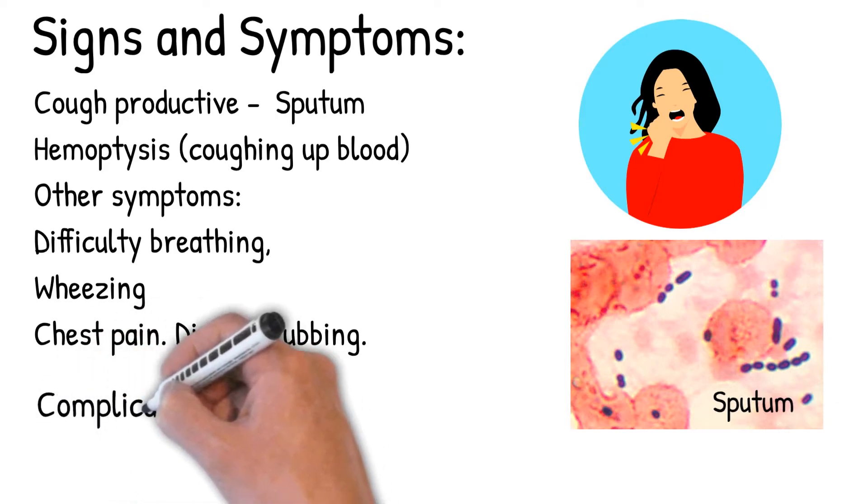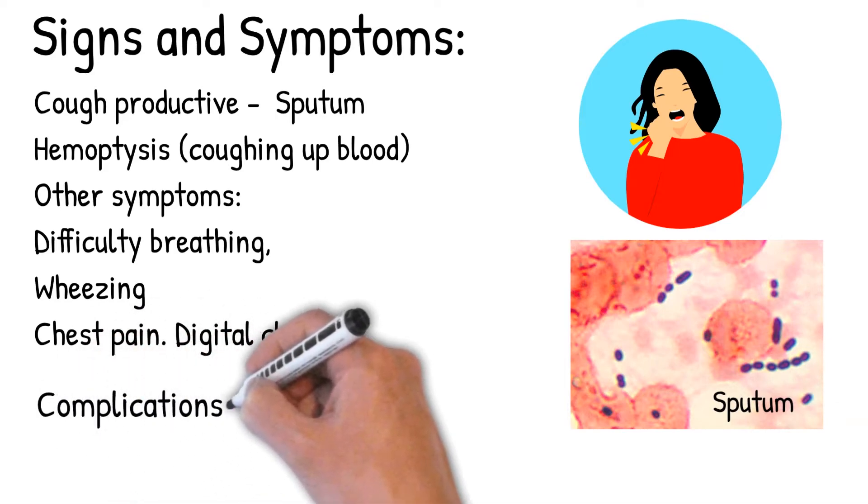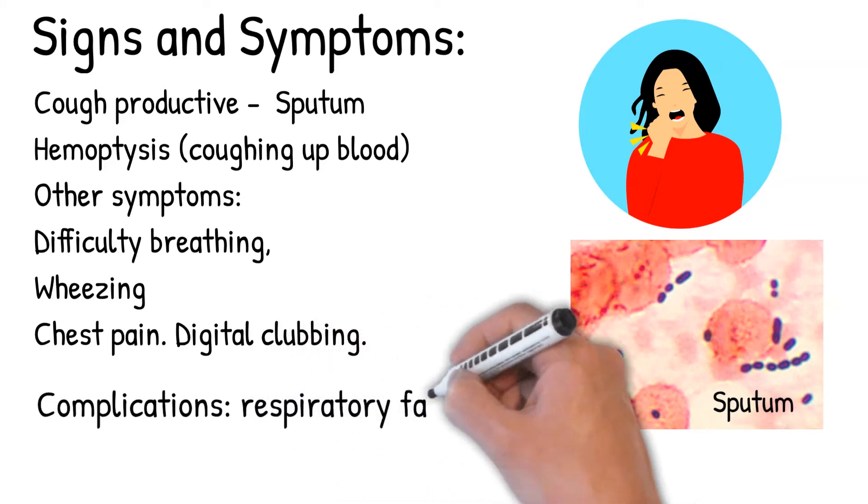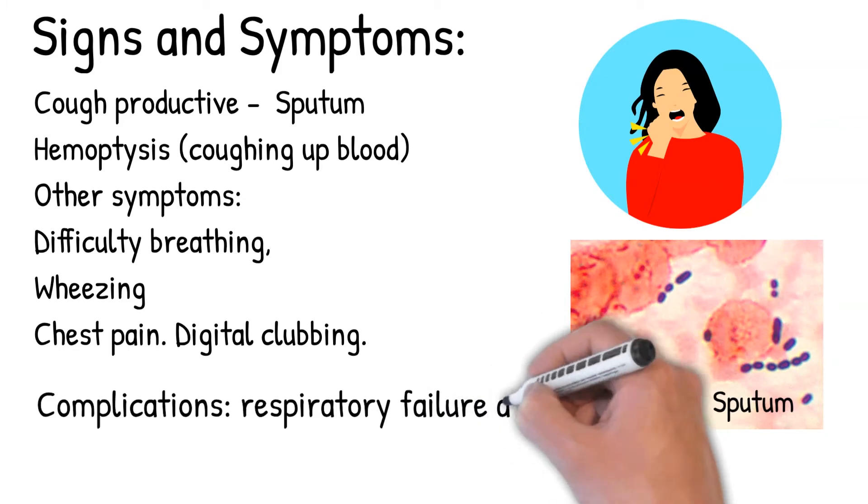Respiratory failure occurs when not enough oxygen passes from the lungs into the blood. Atelectasis occurs when one or more segments of the lungs collapse or do not inflate properly.